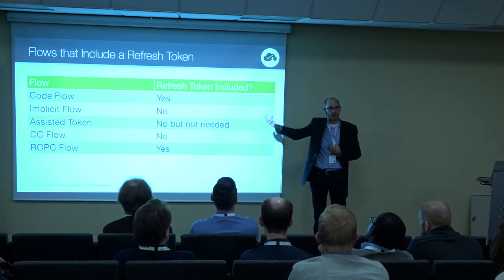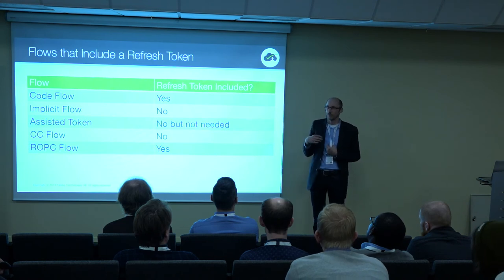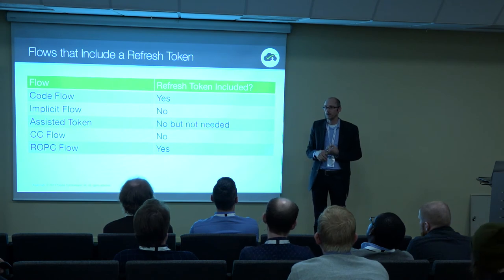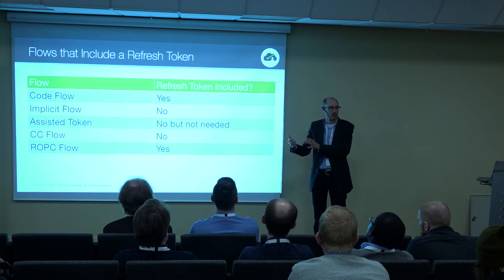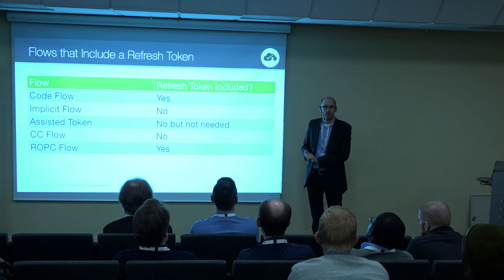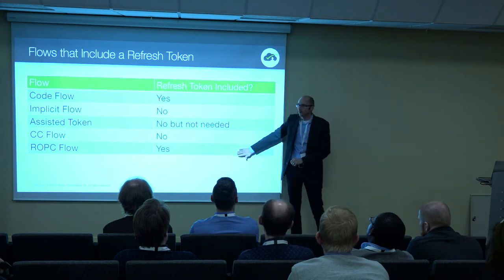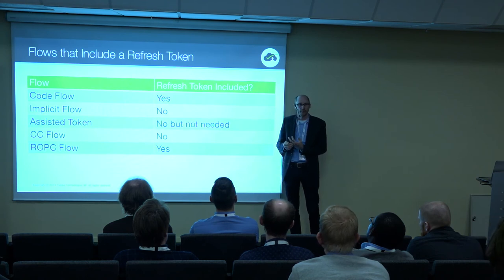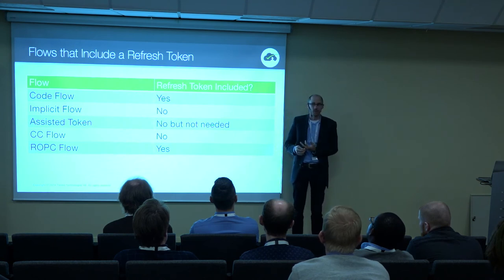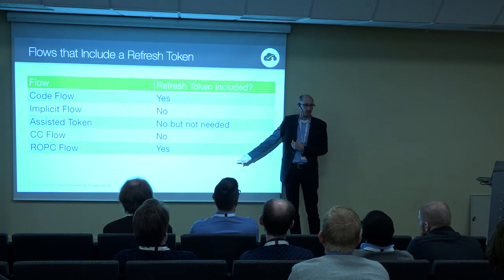The resource owner password credential flow is when you actually accept a username and password from the end user and submit that to the OAuth server to get back a token. The reason for doing this is so your API has one security model — it doesn't matter if it's server-to-server, implicit, any of this — you always want a token from the only security token service you trust. But ROPC is legacy. The application has to ask for username and password from the user, which was sort of the whole point of inventing OAuth. It's meant for backward compatibility, and if you're doing greenfield development, this should be off your list.